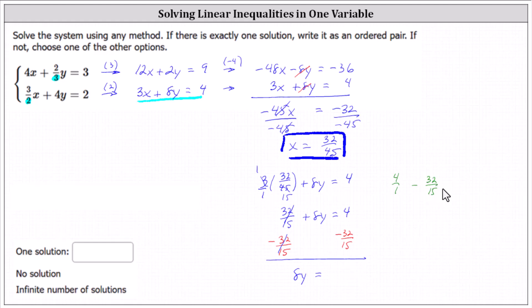The least common denominator is 15, which indicates we multiply 4 by 15/15. We have a common denominator of 15, and the numerator is 60 minus 32, which is 28. We now have 8y equals 28/15.